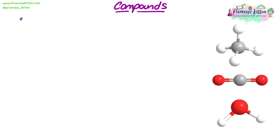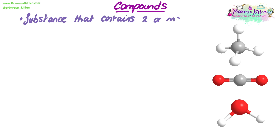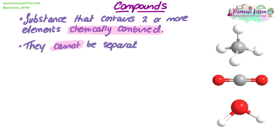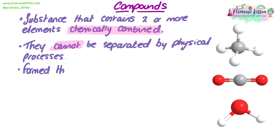Next we're going to look at compounds and what compounds are and how we describe them. Compounds are defined as a substance that contains two or more elements chemically joined together. Elements contain only one type of atom, so compounds must contain two or more types of atom — two or more elements chemically combined. They can't just be mixed together; they need to have undergone a chemical reaction. Compounds cannot be separated by physical processes such as filtering or boiling; they can only be separated by chemical reactions.